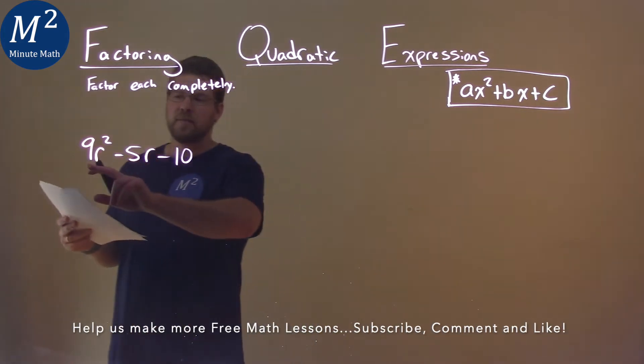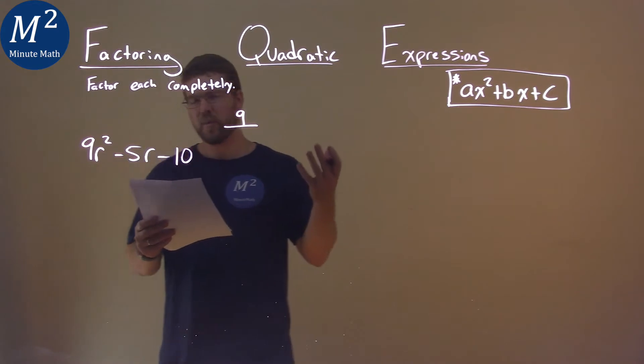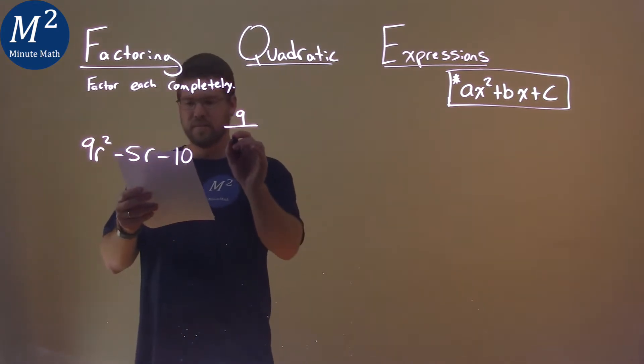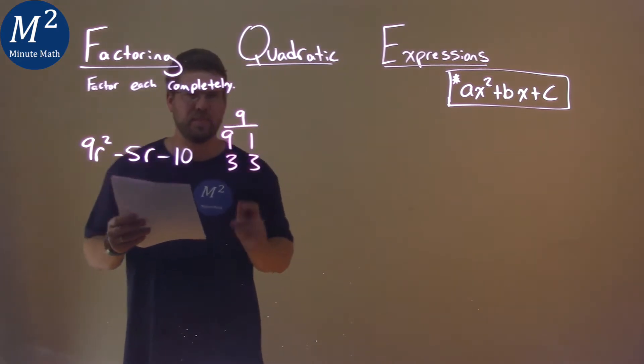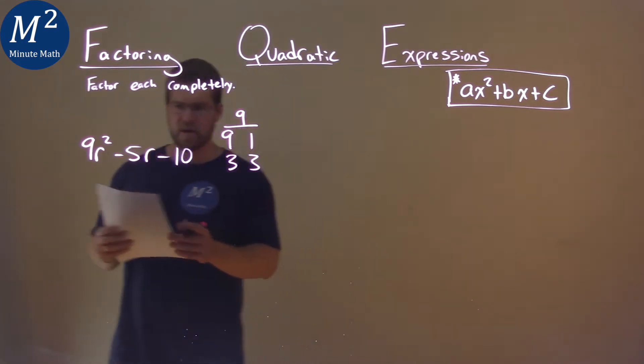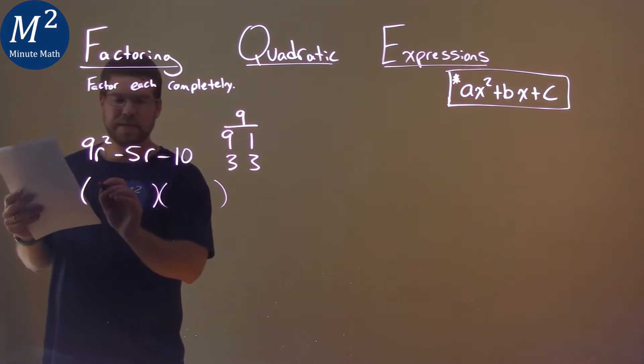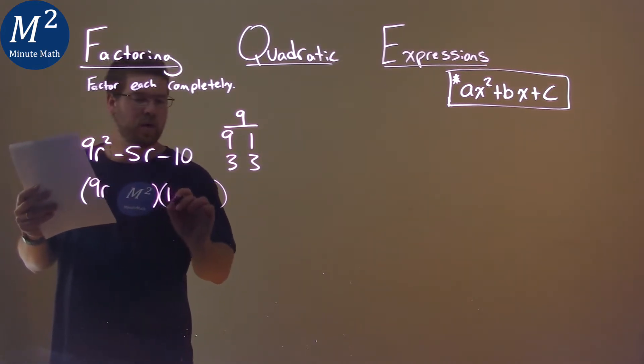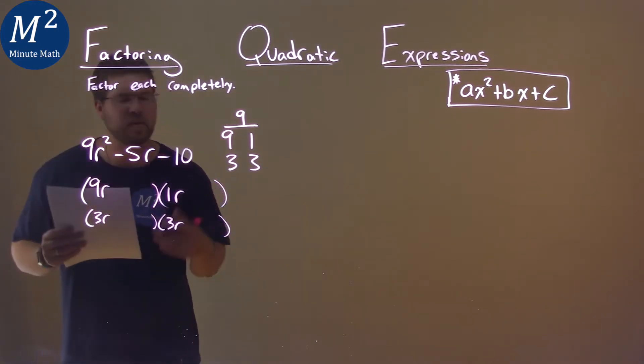First thing I'm looking at is my a value - it's 9. Two numbers that multiply to be 9 are either 9 and 1, or 3 and 3. Those are the two options to set this up because when we're factoring it, it has to have this form: some 9r and 1r and then some other number, or 3r and 3r.